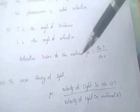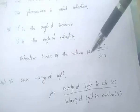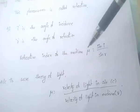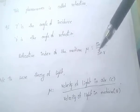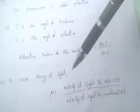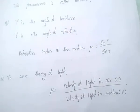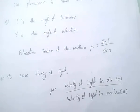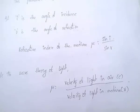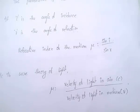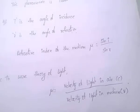According to the wave theory of light, mu equal to velocity of light in air by velocity of light in medium.